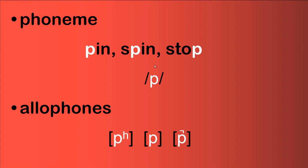We have only one symbol for the sound 'puh' in English, but it can have allophonic variations or variants. These three are the three allophones of 'puh.' The first is 'puh' as in 'pin' or 'pencil,' which is an aspirated one.